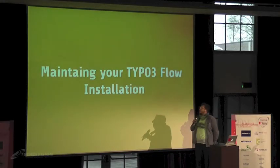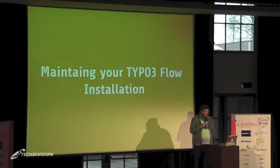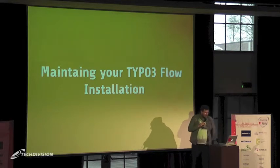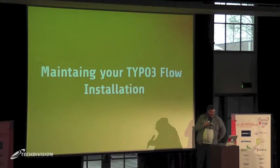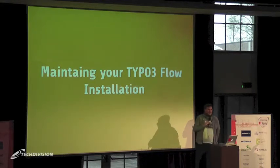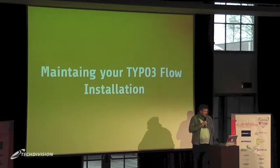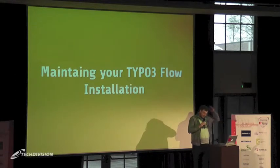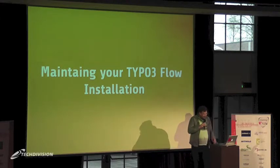The topic we're closing with is called 'Maintaining your Type 3 Flow installation' — there's a spelling error already on the first slide — with Composer and Git and friends, and it will actually be mostly Composer and Git. I'm not sure what I thought about with 'friends', but maybe we'll come up with something.